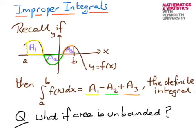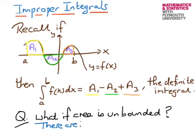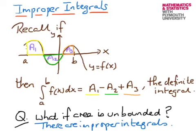The question we want to address in this video is: what happens if the area is unbounded? These areas are all obviously finite — they lay within a restricted area. If our area is unbounded, this is what we call an improper integral. The example sketched here is clearly a proper integral, because the areas are bounded.